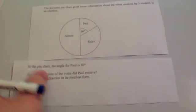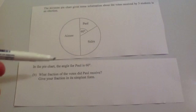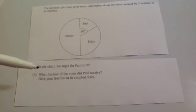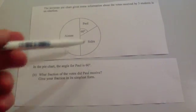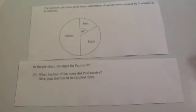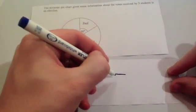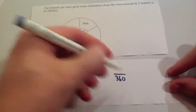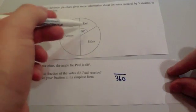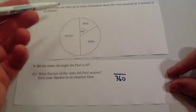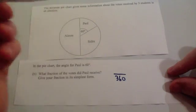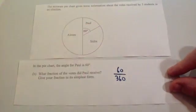Now, the next part of the question says, in the pie chart, the angle for Paul is 60 degrees. It says, what fraction of the votes did Paul receive? So, the pie chart has 360 degrees in total. That means that the fraction will be out of 360 degrees. And Paul got 60 degrees. So his sector is 60 degrees. That means that it's 60 degrees out of 360.